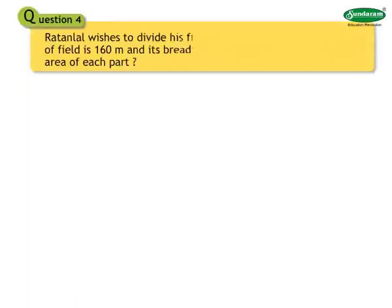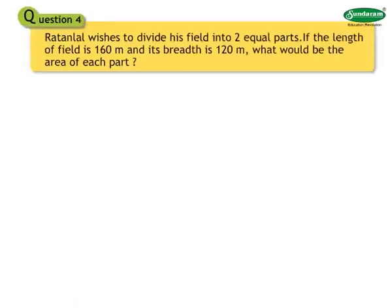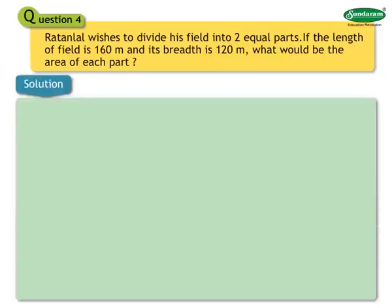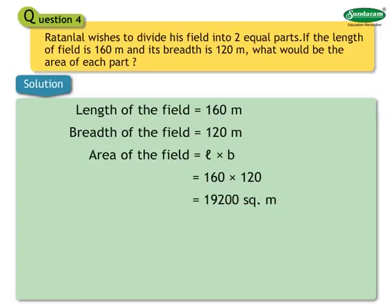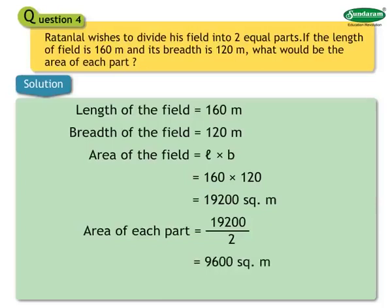Number 4: Ratlal wishes to divide his field into two equal parts. If the length of the field is 160 meters and breadth is 120 meters, what would be the area of each part? Solution: Area of the field equals 160 into 120 equals 19,200 square meters. Area of each part equals 19,200 divided by 2 equals 9,600 square meters.